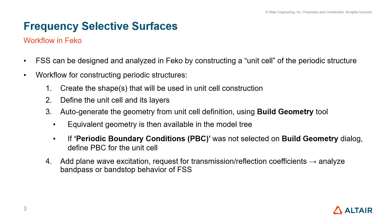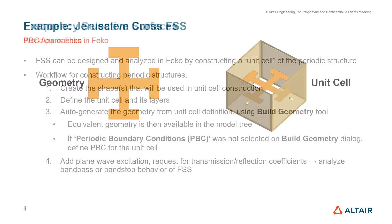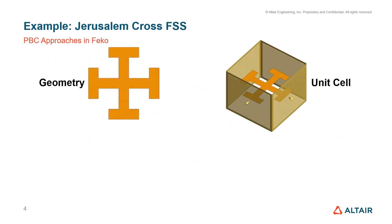Once the simulation is finished, we can plot the transmission or reflection results to look into the band-pass or band-stop characteristics of the FSS structure. I will be demonstrating the workflow just described using an example of a Jerusalem cross.